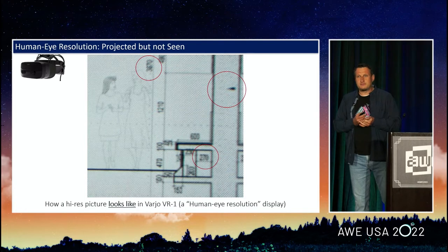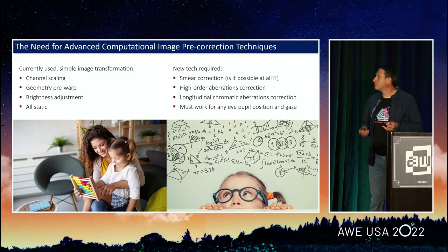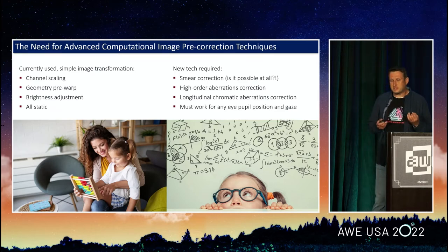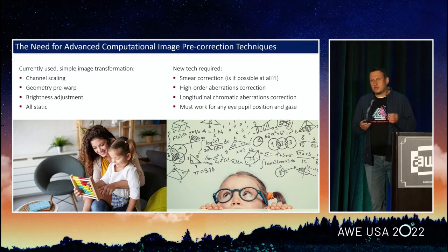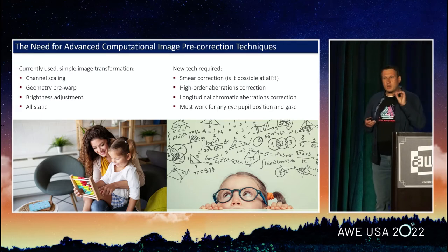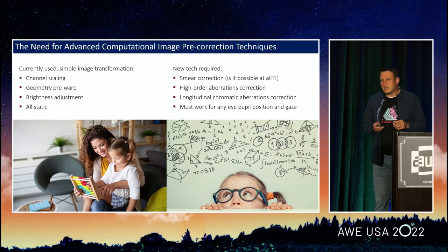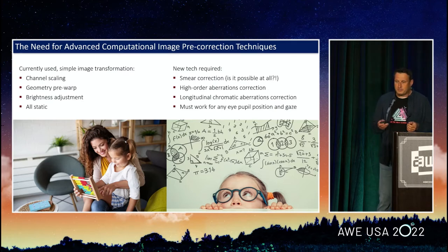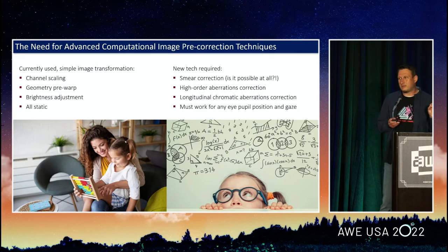The optical design is physically constrained. What about the third component — image preprocessing? Can we improve that? At the end of the day, it's software. Currently used image preprocessing methods in mixed reality displays are super simple: fixed channel scaling, which addresses just a subset of chromatic aberrations — so-called lateral chromatic aberrations — and it works only when the eye pupil is at the optical axis and the user looks exactly at the center. Geometry pre-warp is also fixed, and at wide angles the geometry starts wobbling, etc.